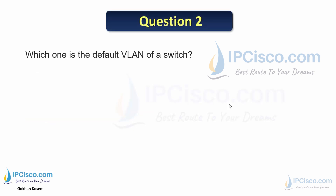Question 2: Which is the default VLAN of a switch — VLAN 0, 1, 10, 100, or 1000? This is also the default native VLAN. The answer is VLAN 1. VLAN 1 is both the default VLAN and the default native VLAN.